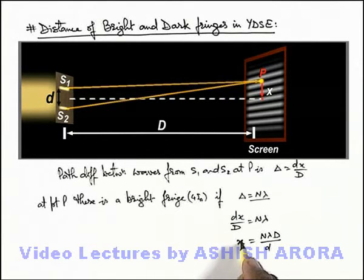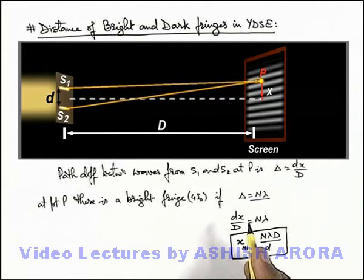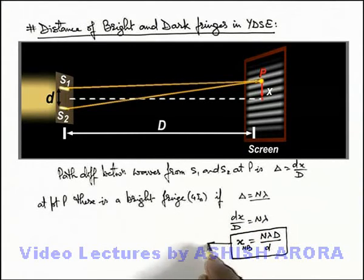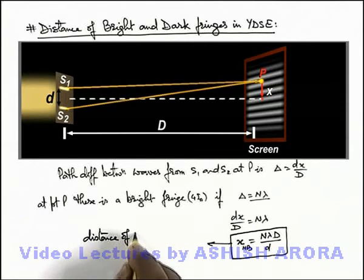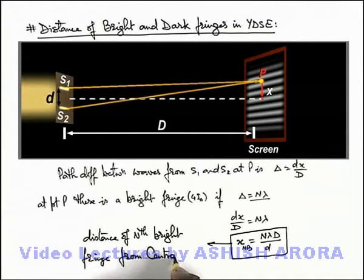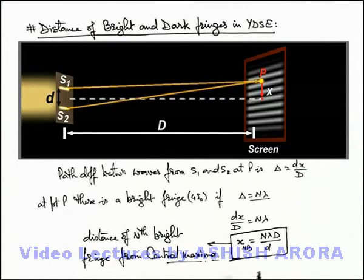We can write this with a subscript x_nB, because this is the distance of the nth bright fringe from the center of the screen. For n equal to 1, the path difference will be λ, which is the first maxima closest to the center. Similarly, for 1, 2, 3, 4, point P will be the nth bright fringe. So this is the distance of the nth bright fringe from the center of the screen, or central maxima — as we already studied, at point O the maxima obtained is called the central maxima. This is a direct relation useful in numerical applications.